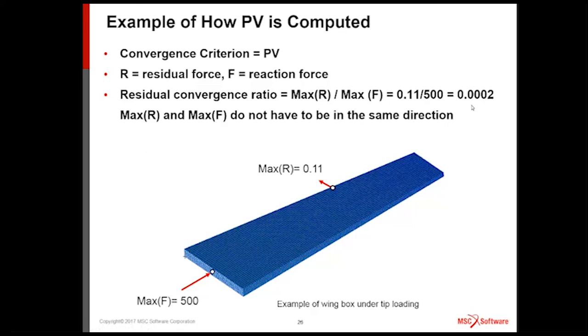And do notice, it doesn't matter what component and in what direction. We simply take the largest component and divide them. This is fairly strict compared to some of the other codes on the market. Some of the other codes on the market will go through an average error calculation. The average of all residual forces divided by the average reaction force. We pinpointed the most critical error. So this is fairly strict, stringent criterion.